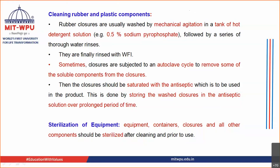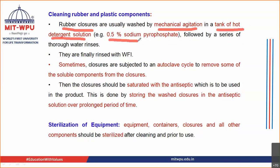The next step is cleaning of the rubber and plastic components. The rubber closures are the rubber components present. They are usually washed by the mechanical agitation method, whereby you take all these rubber components and put them in a tank of hot detergent solution.